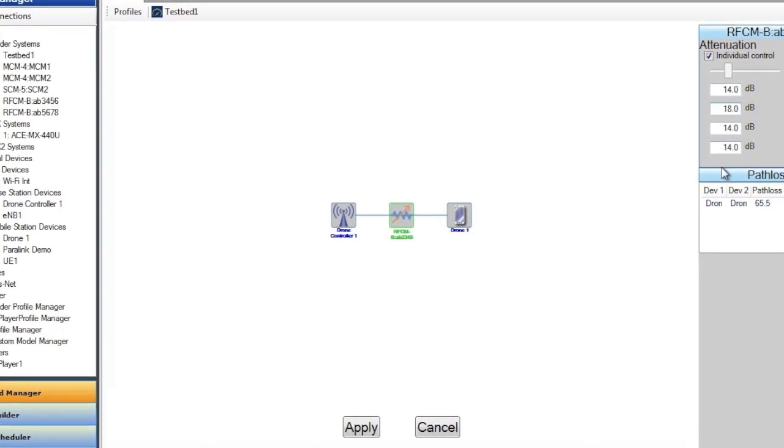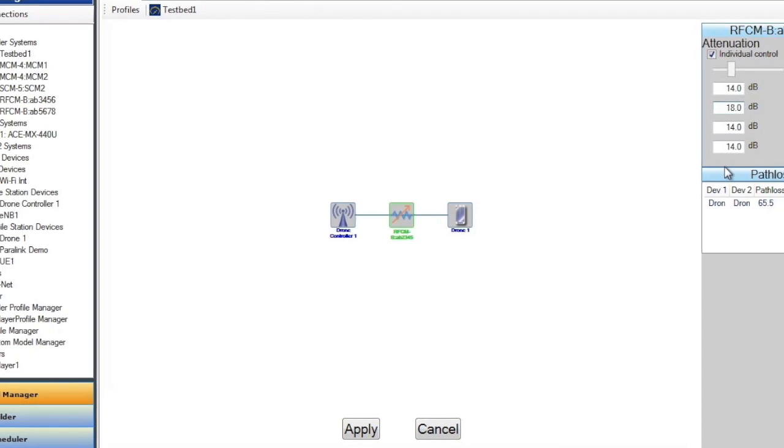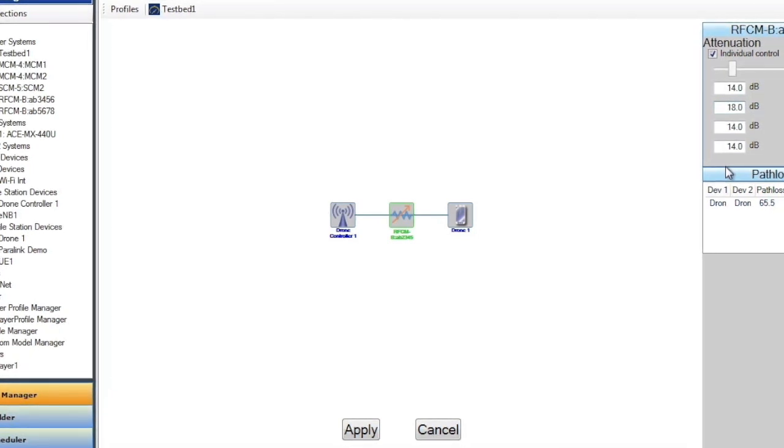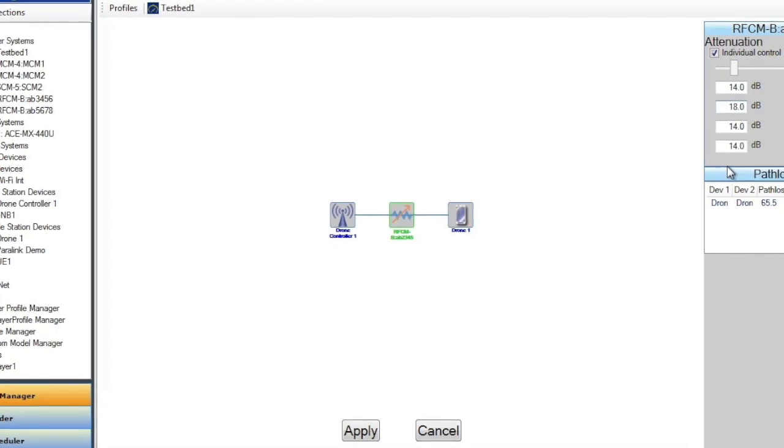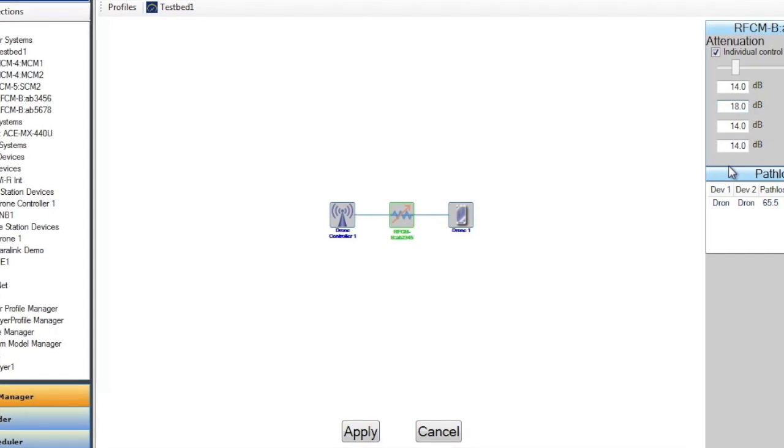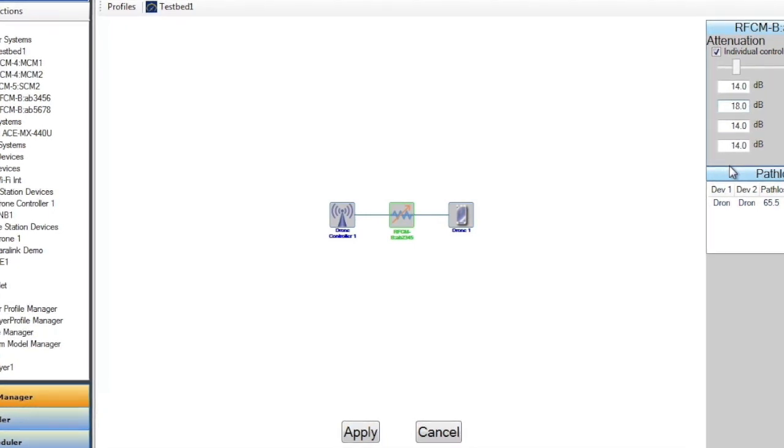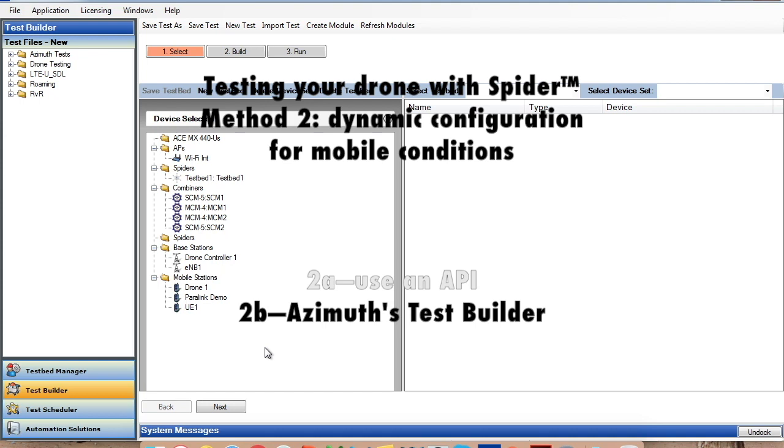This kind of manual control is good if you want to test the performance of the drone under static conditions. If you want to test the performance of the drone under mobile conditions, there are two ways to do it. One, you can create mobility by controlling Spyder through the API. Spyder has a TCL API that allows you to control different aspects such as the path loss, how quickly you want the path loss to vary, what the steps should be.